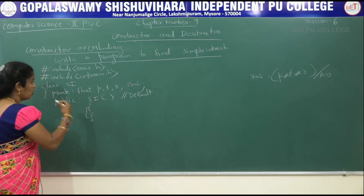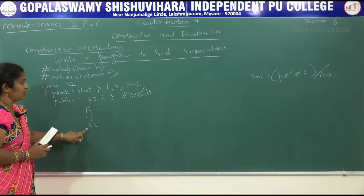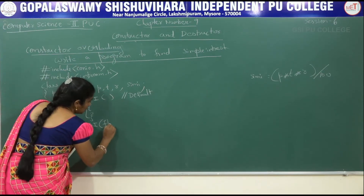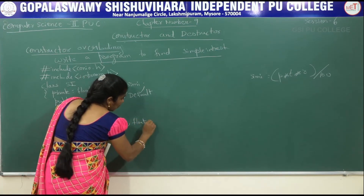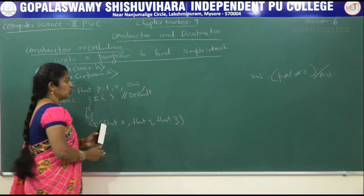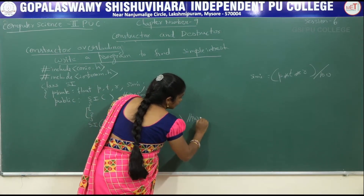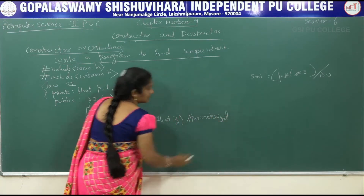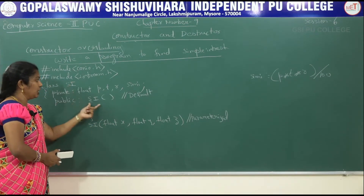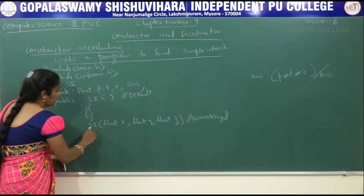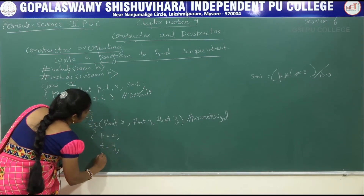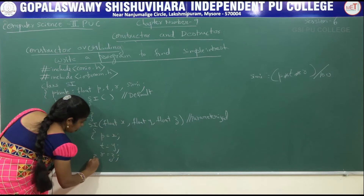Next, one more function I am taking — SI only. Class name and function name are same. Here also the function name is SI and the class name is also SI. Here I am taking float X, float Y, float Z — how many arguments? Three arguments. That is why it can be called a parameterized constructor. This is the default constructor, whereas here it is the parameterized constructor. Here I am initializing: P equals X, T equals Y, R equals Z. Then close this function.